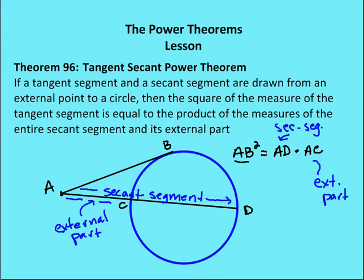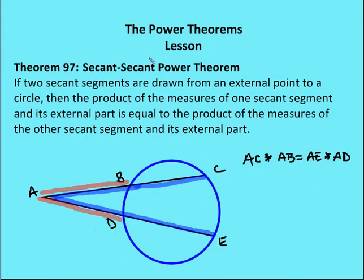The last power theorem is the secant-secant power theorem, which says that if I have two secants drawn from an external point outside the circle, then the product of the entire secant times its external part — AC times AB — is going to be equal to the entire secant segment AE times its external part AD. Let's take a look at some of the more difficult problems in the chapter.